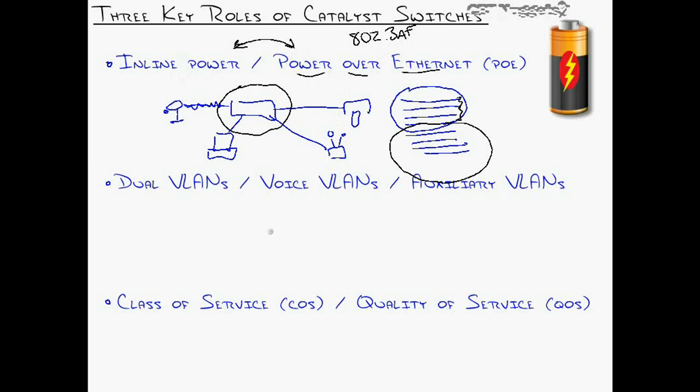People have become accustomed to the phone system working even if the power is out, since the phone company battery-backs up their central offices. Inline power or Power over Ethernet gives you that same capability. These two terms are actually two different standards. Cisco inline power came first — Cisco's proprietary pre-standard approach — and it eventually became the industry standard known as Power over Ethernet or 802.3af. The second key role for Catalyst switches is providing dual VLANs, also called voice VLANs or auxiliary VLANs.